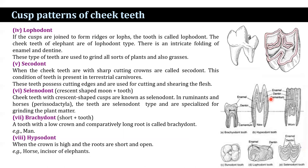In the lophodont type, the cusps are joined to form ridges or lobes, and the teeth are called lophodont. The cheek teeth of elephants are of lophodont type, with intricate folding of enamel and dentine; these teeth are used to grind all sorts of plants and grasses. In the secodont type, when the cheek teeth have sharp cutting crowns, they are called secodont; this condition is found in terrestrial carnivores, and these teeth possess cutting edges used for cutting and shearing flesh. In the selenodont type, cheek teeth with crescent-shaped separate cusps are known as selenodont, found in ruminants and horses, and are specialized for grinding plant matter.